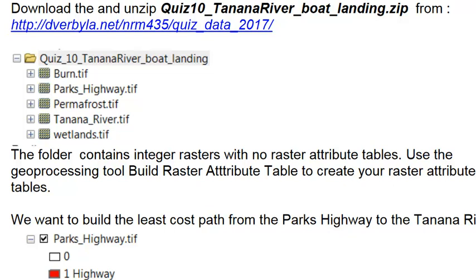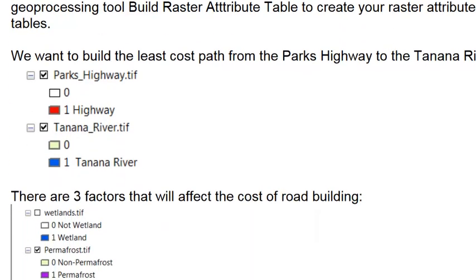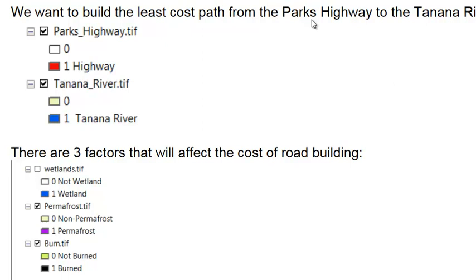In this application, we will be doing a least cost path application using cost surfaces. We'll have several different rasters, and we want to build the least cost path from the Parks Highway down to the Tanana River, where the Parks Highway is represented by zero for no highway pixel and one for a highway pixel. Same thing with the Tanana River — one represents a Tanana River pixel.